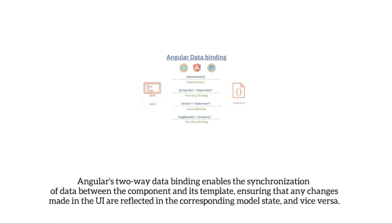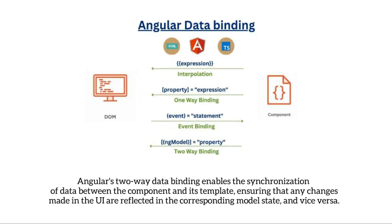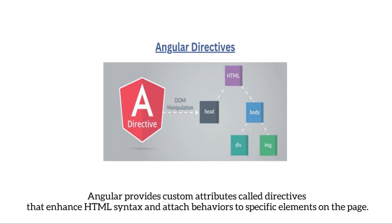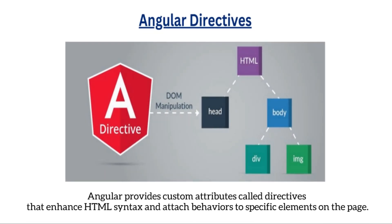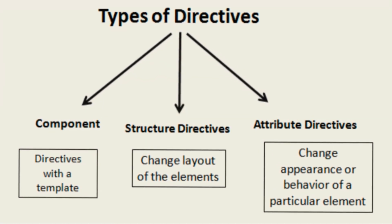Angular's two-way data binding enables the synchronization of data between the component and its template, ensuring that any changes made in the UI and the corresponding model state are reflected vice versa. Angular also provides custom attributes called directives that enhance HTML syntax and attach behaviors to specific elements on the page. There are three types of directives: component directives, structural directives, and attribute directives.